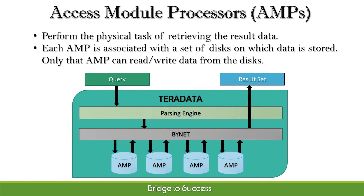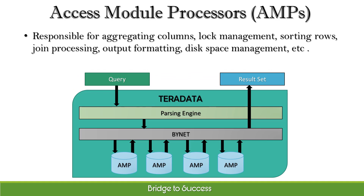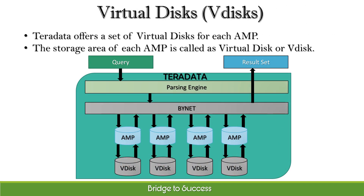Access module processors perform the physical task of retrieving the result data. Each AMP is associated with a set of disks on which data is stored, and only that AMP can read or write data from those disks. The AMP is also responsible for aggregating columns, lock management, sorting rows, join processing, output formatting, disk space management, and more.